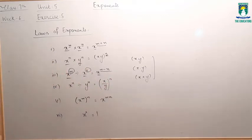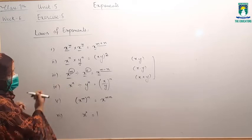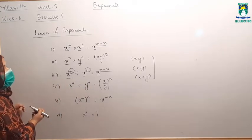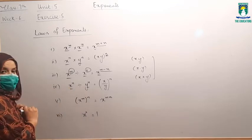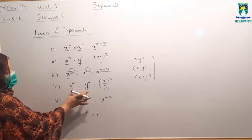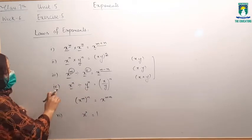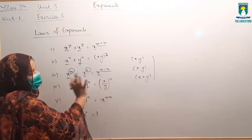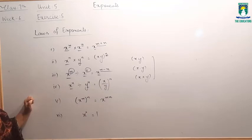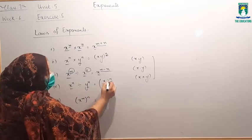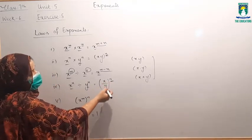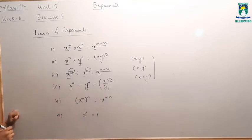Fourth law: x raised to power n divided by y raised to power n. अब base सेम नहीं है, but power सेम है, और ये दोनों divide हो रहे हैं. आप इसको write करेंगे x divided by y, whole raised to power n. Base को one time लिखें, exponent को one time लिखें, और bases को divide कर दें. यह था आपका fourth law.